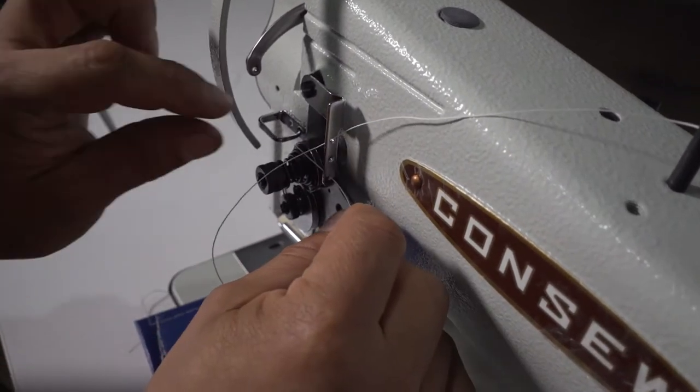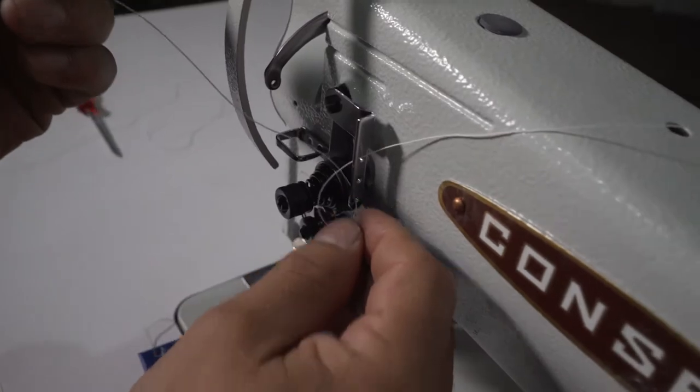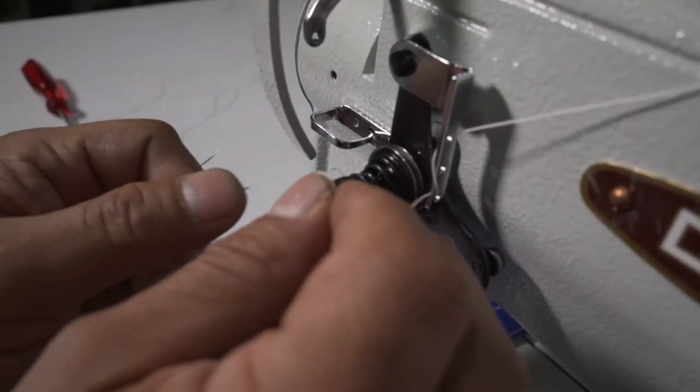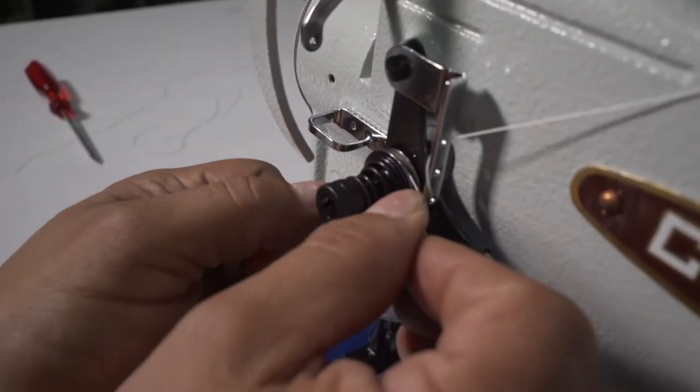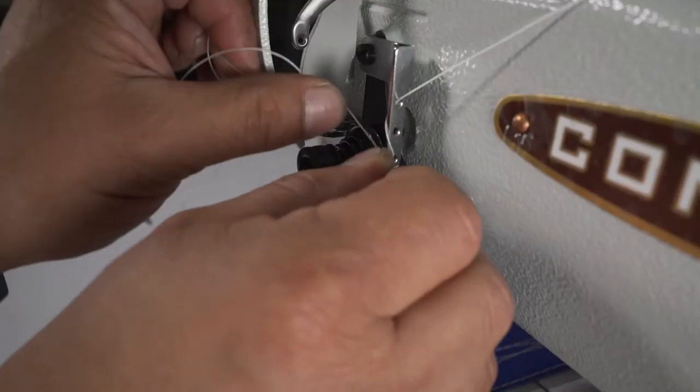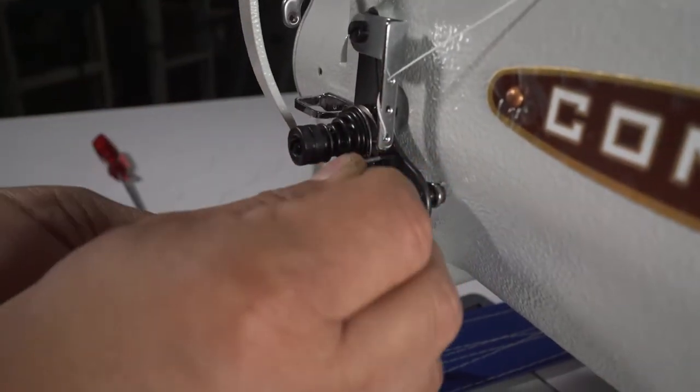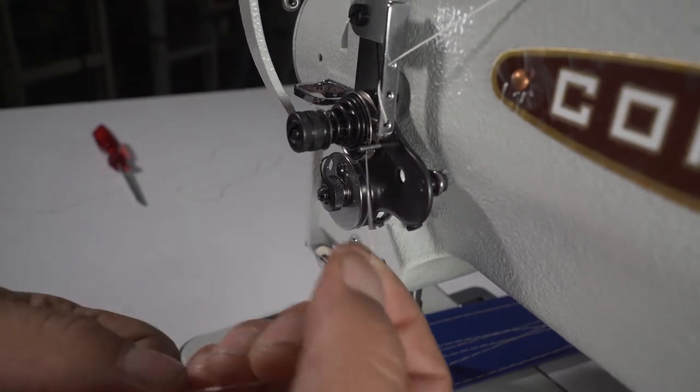This one has three holes but I'm using just two holes, right to left. And now I'm going to put it into the main tension. This is two discs here, but in between I pull my thread.